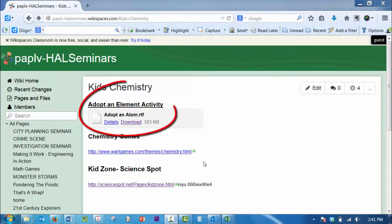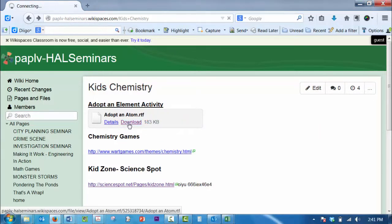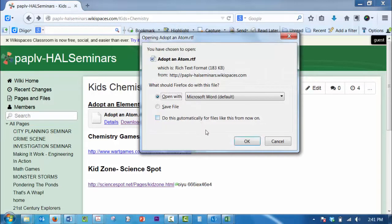At the top of the page, you will see the Adopt an Element activity. Click on the download and a window will appear, giving you the option to open the document.